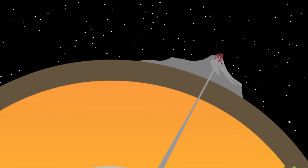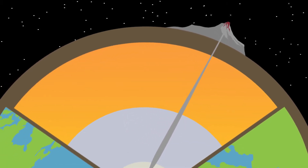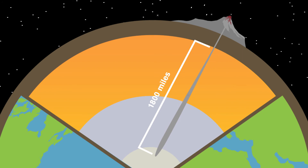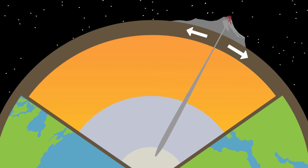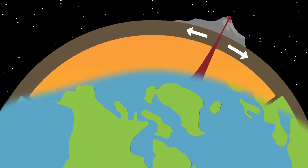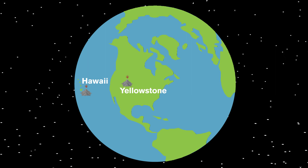The third way to form magma is by hot spots. Hot spots are hot columns of rock that can extend as deep as the core, which is 1,800 miles beneath our feet. Hot spots form magma in a similar fashion to spreading centers, only the melting happens deeper in the mantle because of the hot column of rock. Geologists typically think of Hawaii and Yellowstone as examples of hot spot volcanoes.